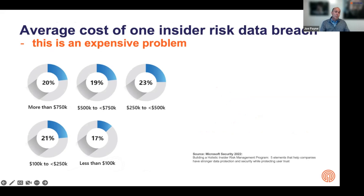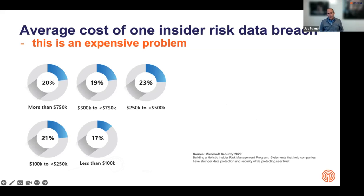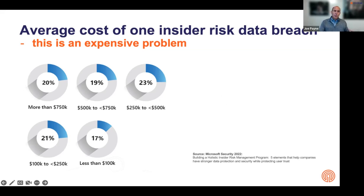Why is it important to find these risk issues? These problems are expensive. From the Microsoft study, 20% of insider risk data breaches cost over three quarters of a million dollars — that's one in five — and 83% cost over a hundred thousand dollars. So if you have a breach with insider risk, you're going to have an expensive problem. The three drivers — digitization and collaboration, people working remotely, and people changing jobs — are all things that are increasing. When all three vectors are going up, you're going to see a huge increase in risk.